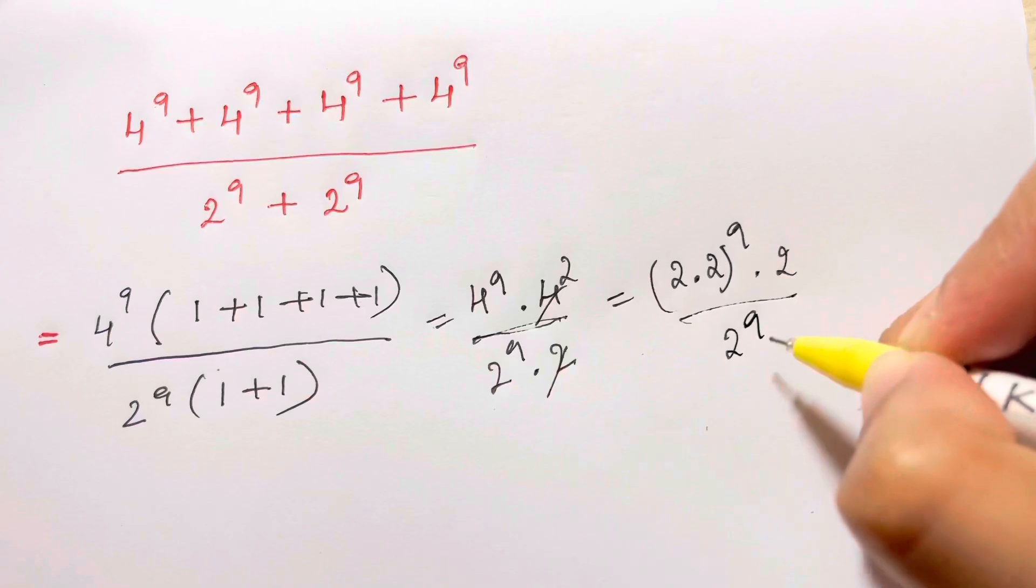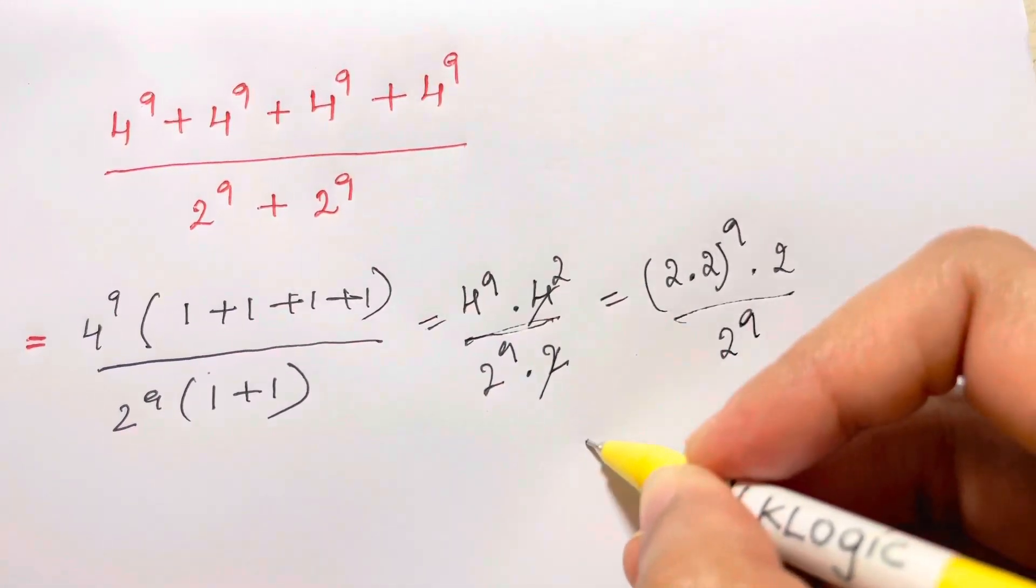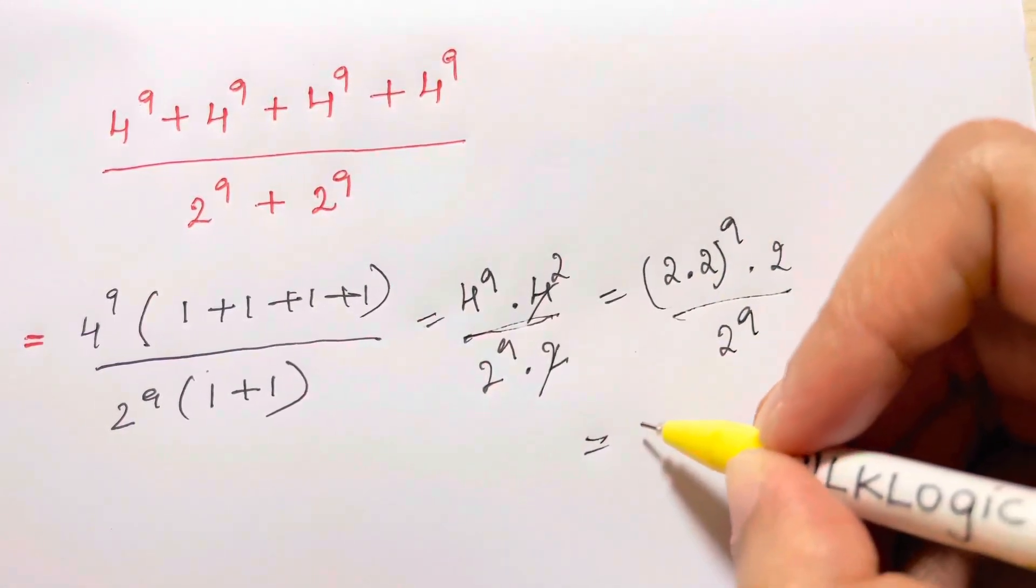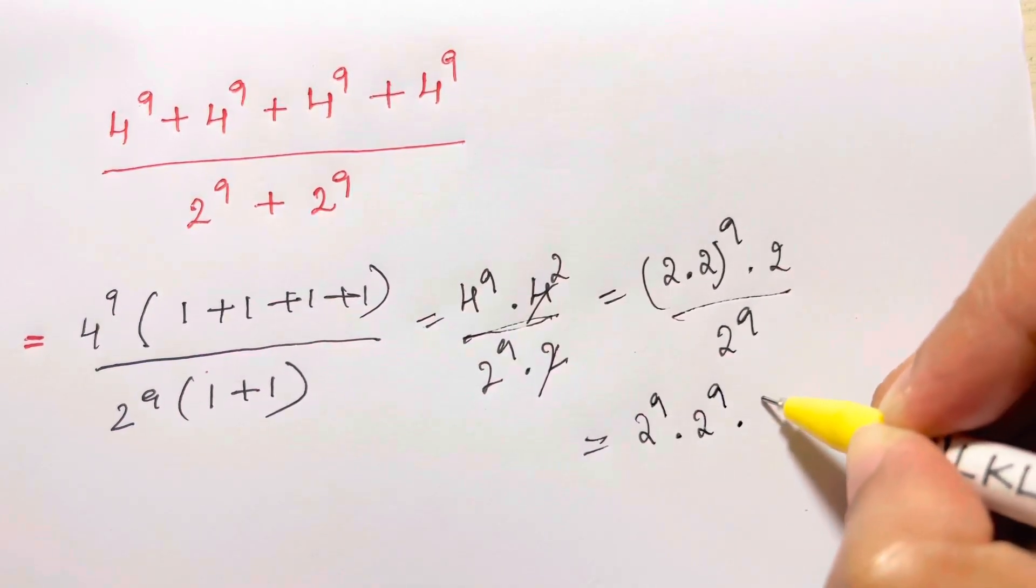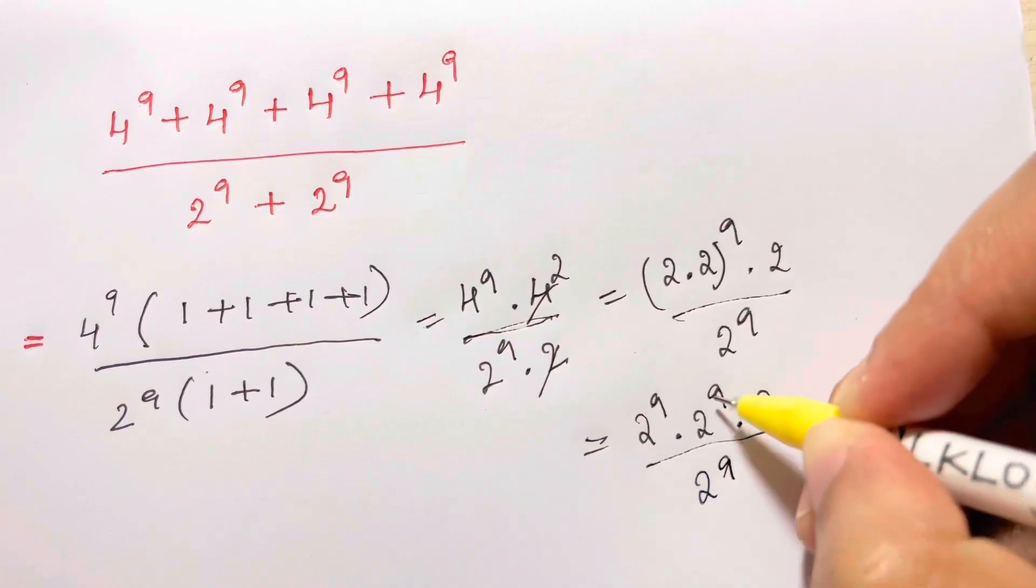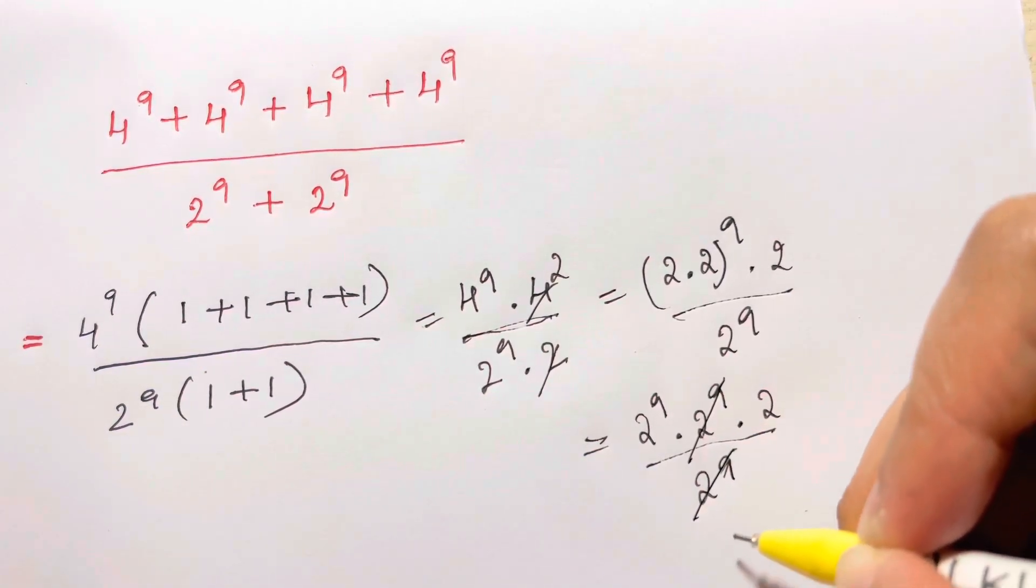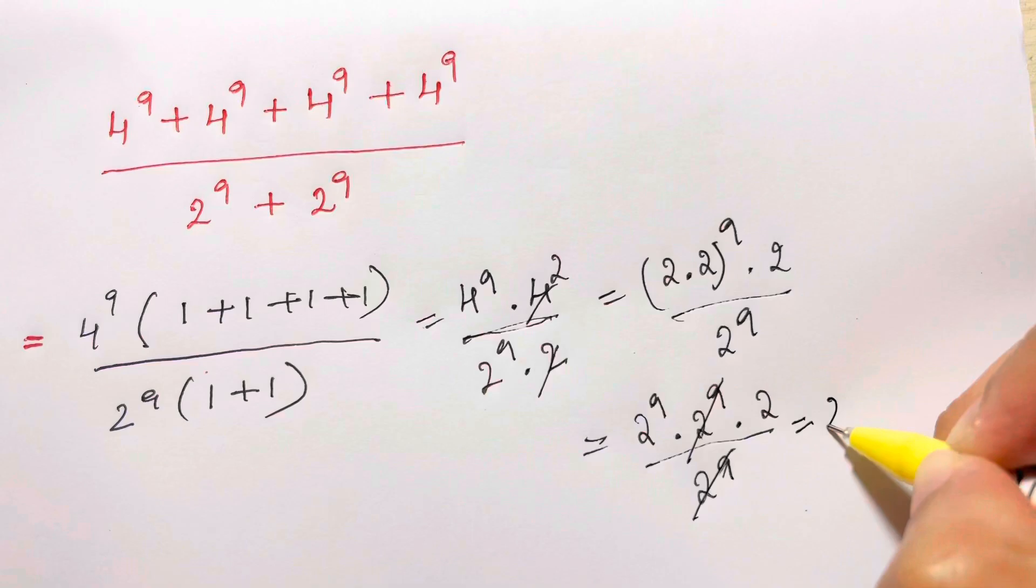Then you can simply split them: 2 to the 9th times 2 to the 9th times 2 over 2 to the 9th. One times 2 to the 9th gets cancelled, so you're left with 2 to the 9th times 2.